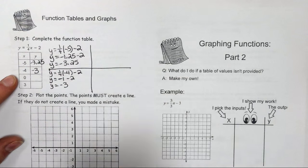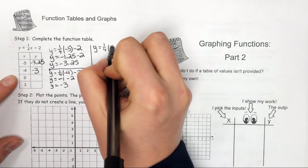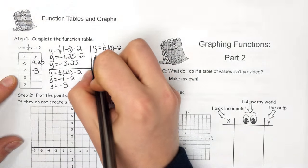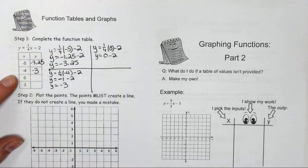Next one is 0, so I'm going to plug in 0. Y equals 1/4 times 0 minus 2. 1/4 times 0 is 0, and 0 minus 2 is negative 2.